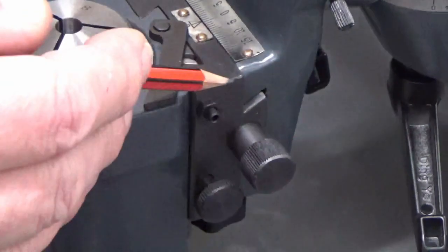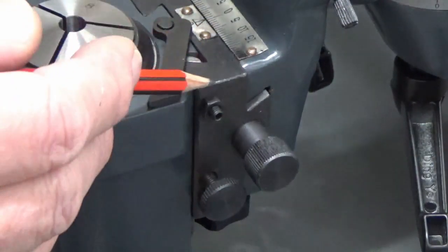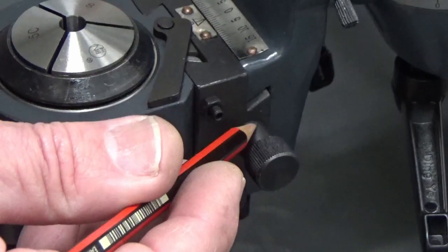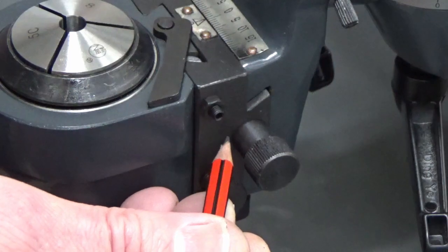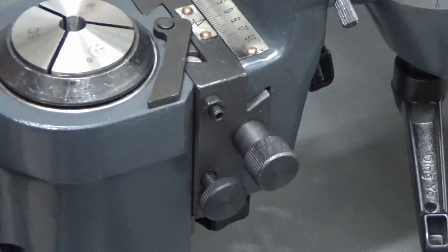So as we've got no subdivision indicator on the main indexing, what we're going to do is make up a fitting that fits onto this adjustment screw here and we're going to put a mark on the side of the machine so that we can do subdivisions of 1mm.